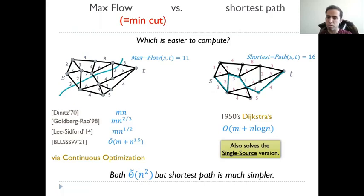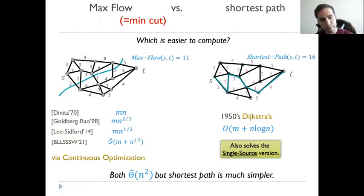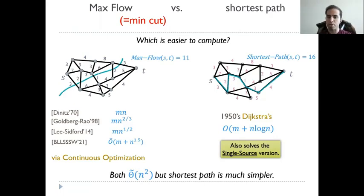In addition to that, the Dijkstra algorithm also solves the single-source version, where one needs to compute the shortest path from a single node to all of the other nodes in the graph. Both of these problems can be solved in quadratic time, but we already have a few indications that maybe the shortest path problem is simpler.